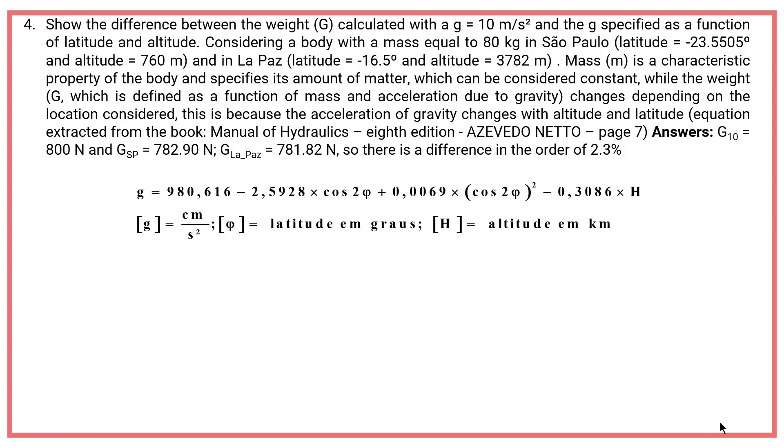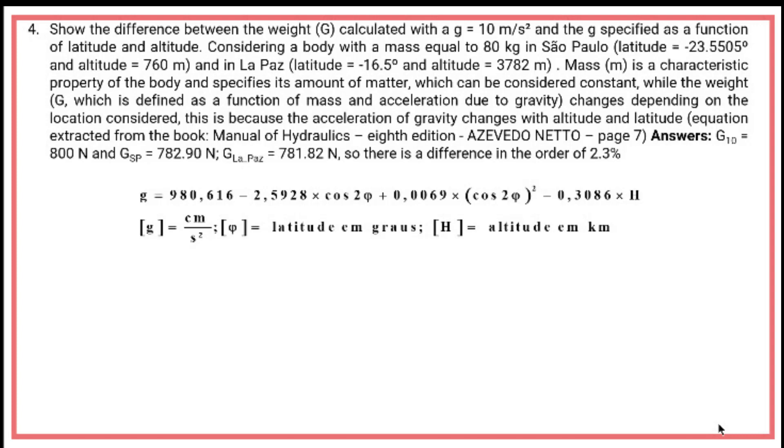Answer: G with G equal to 10 meters per square second equals 800 newton. G with acceleration calculated in Sao Paulo equals 782.90 newton. G with calculated acceleration at La Paz equals 781.82 newton. So there is a difference in the order of 2.3 percent.